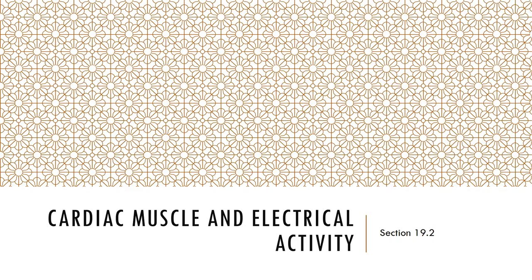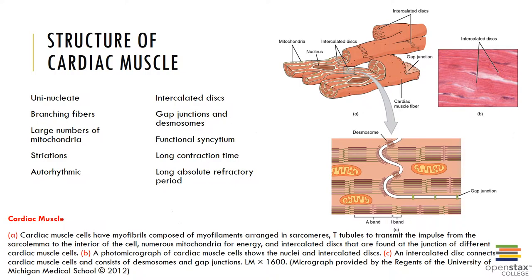Now let's examine the microscopic anatomy of cardiac muscle. Cardiac muscle cells possess a single, centrally located nucleus — they are uninucleated — and are relatively small and columnar shaped. Unlike skeletal muscle cells, cardiac muscle cells branch. They are metabolically very active, possessing large numbers of mitochondria and richly supplied with capillaries. Cardiac muscle cells also possess striations due to the highly organized arrangement of myofibrils into repeated sarcomeres.